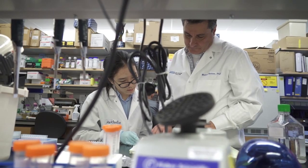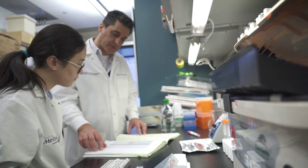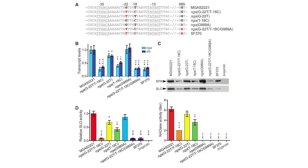Every gene has what's called a regulatory region, which is involved in how genes are transcribed and how proteins are made. The changes that have occurred with Group A strep involve changes in the regulatory region, and that results in increased production of streptolysin O and NADase.